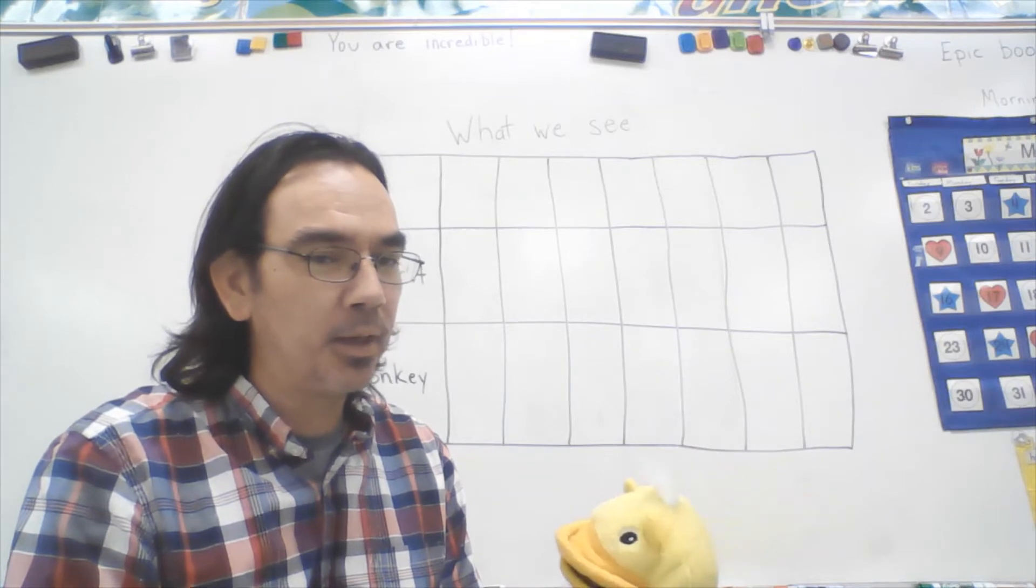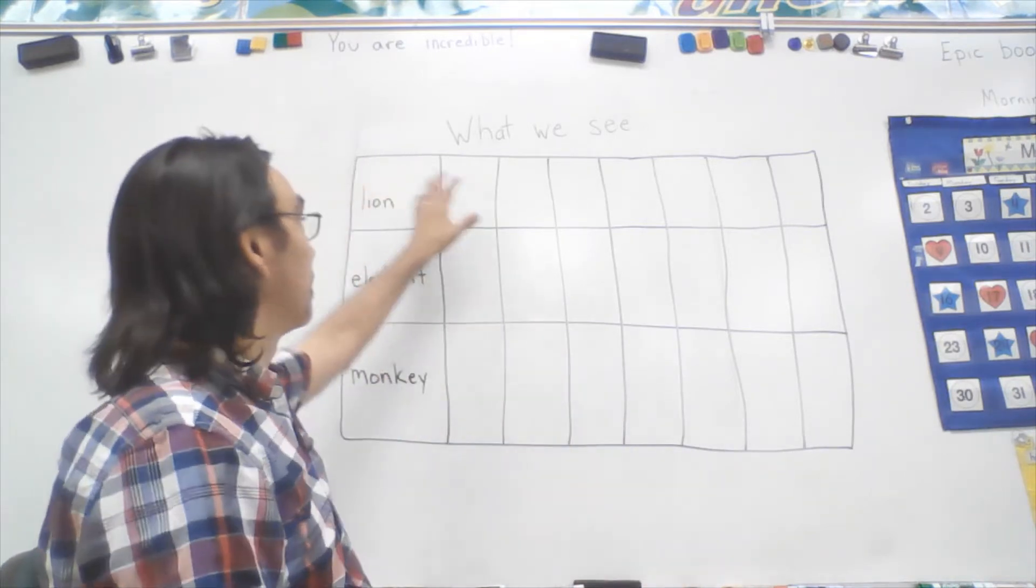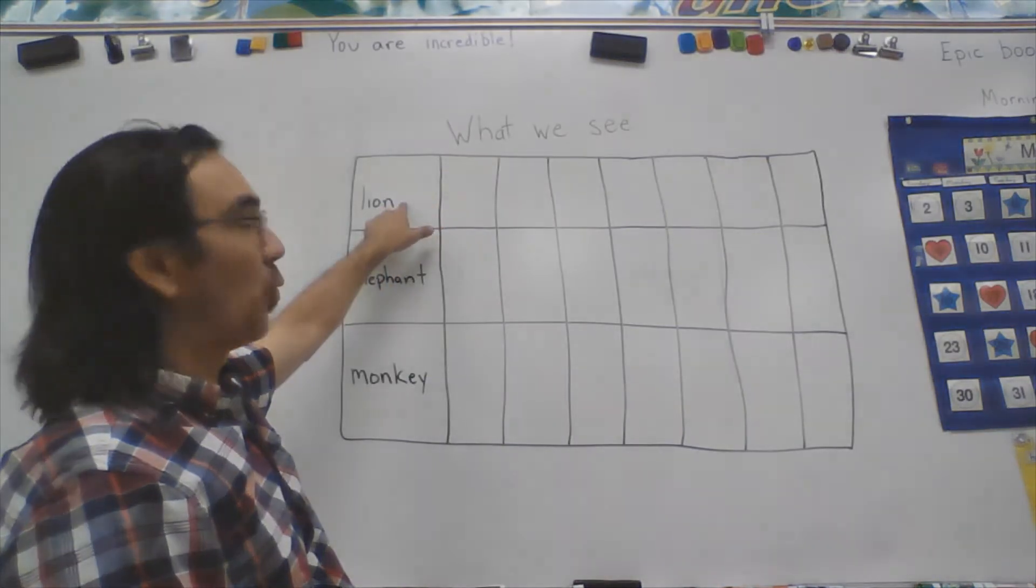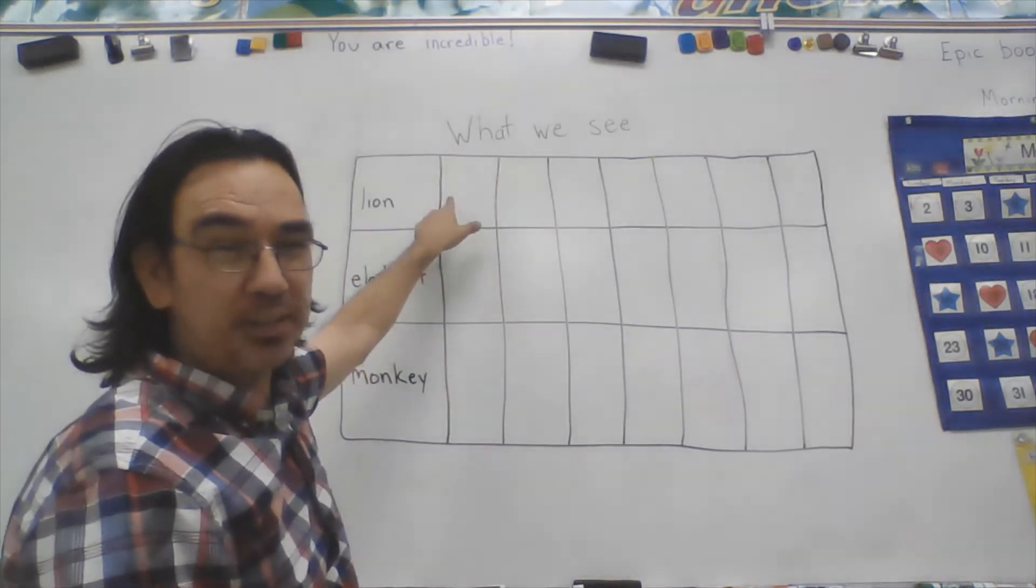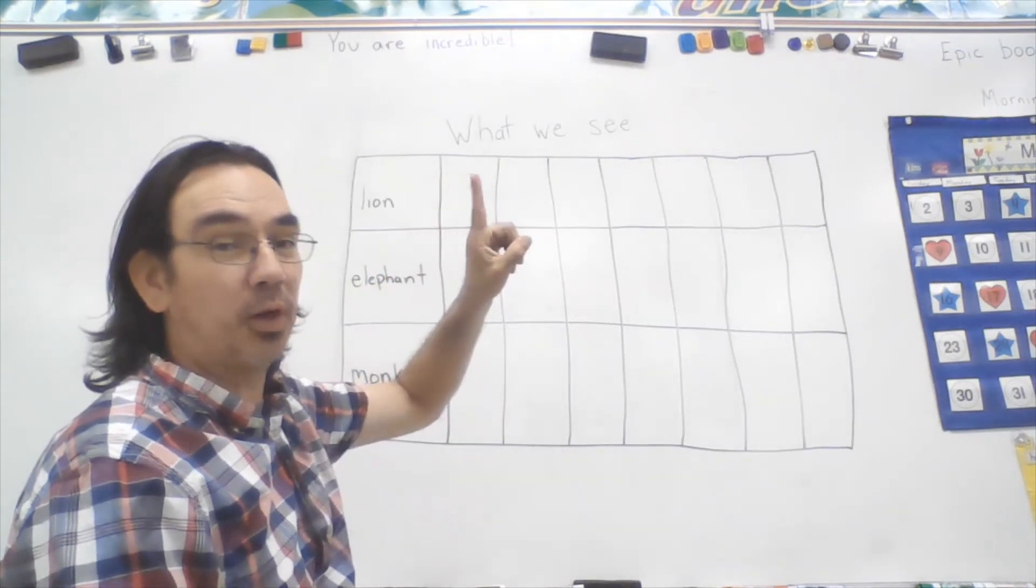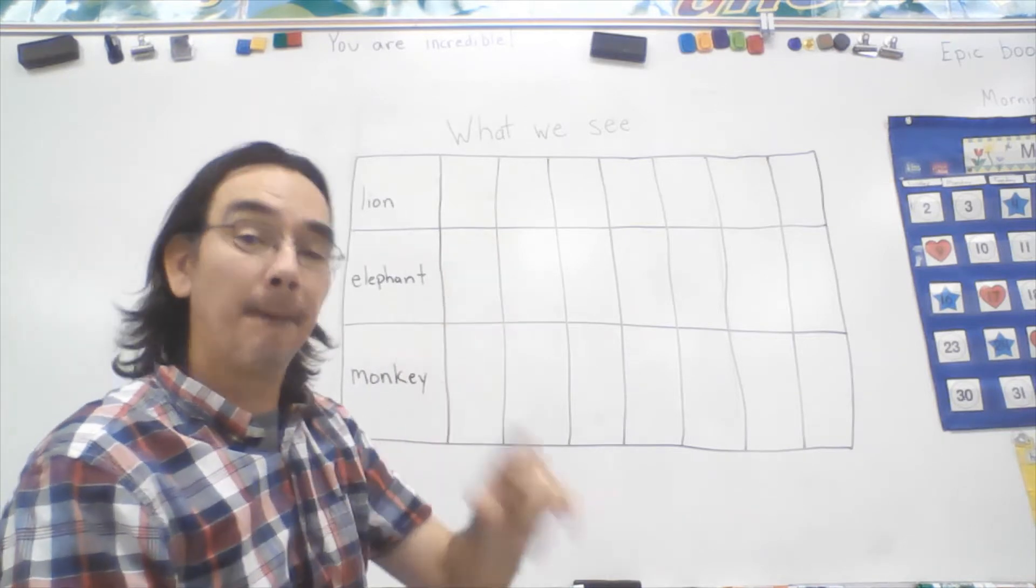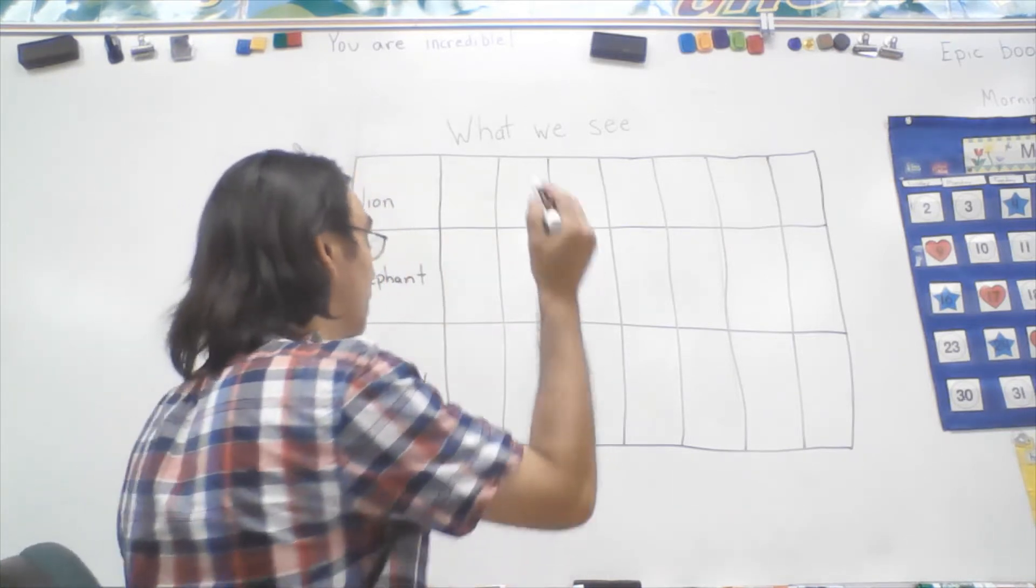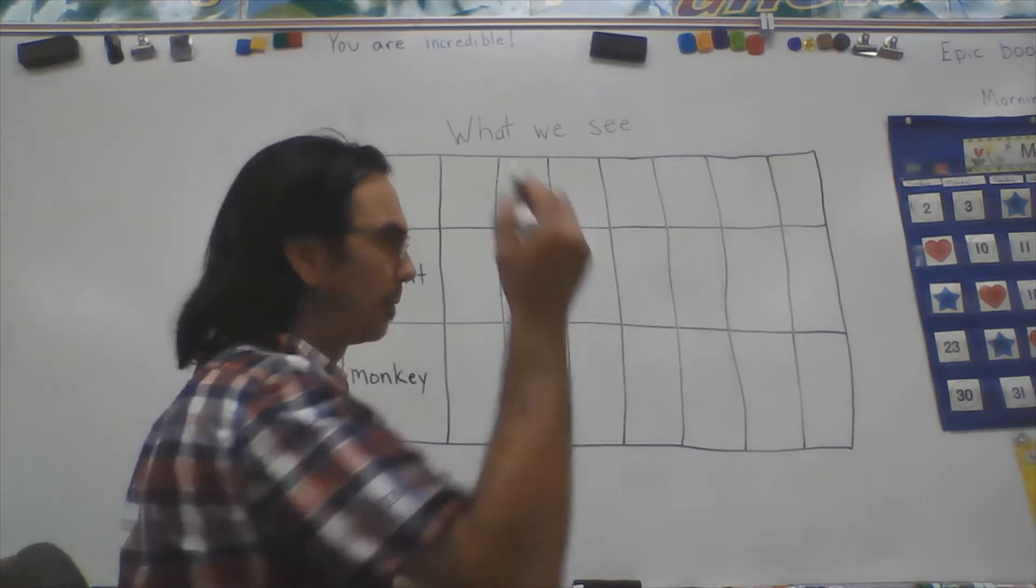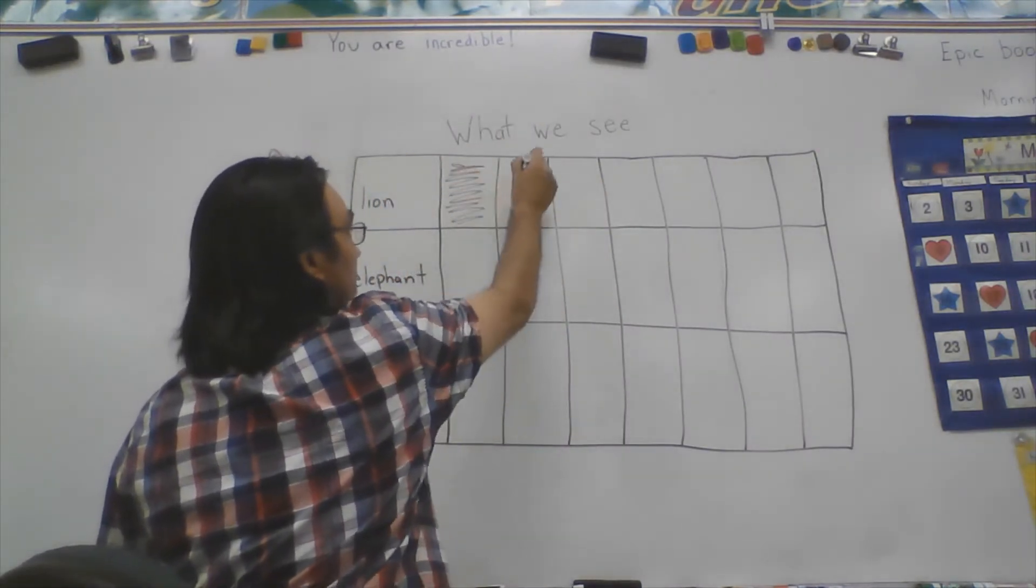Okay, so our chart here, this is lions. When I fill in one of these boxes, it means that we saw one lion. Each box means one. Each box down here means one elephant. Each box down here means one monkey. Okay, so first, and you know what, I'm gonna do it in different colors. First lion, and I'm not gonna fill mine completely in.